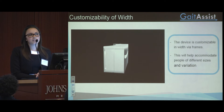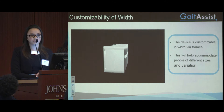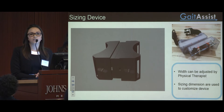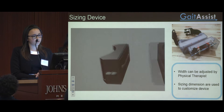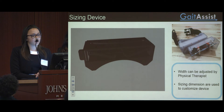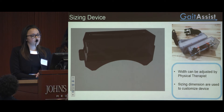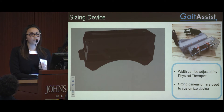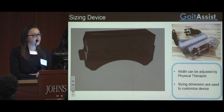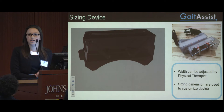It is hard to estimate the ideal width for a patient, so we have developed a sizing device for use by physical therapists. This device will be turned by a key that the physical therapist will use, and the patient can try the device out at varying widths. They will perform several gait tests, and based off of their performance and their comments, the physical therapist will fit them to the ideal size. This size will then be sent back to the manufacturer, and a customized device will be made for the patient.